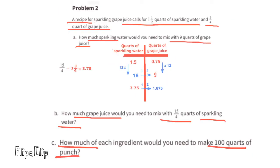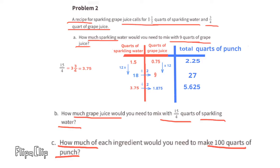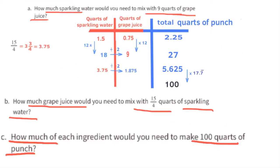Part c: how much of each ingredient would you need to make 100 quarts of punch? We can add a column to this chart for total quarts of punch — add the quarts of sparkling water with the quarts of grape juice to get the total. Since we need to make 100 quarts, we put 100 in the total quarts column. 100 quarts of punch is 17.7 repeated times larger than 5.625 quarts of punch.